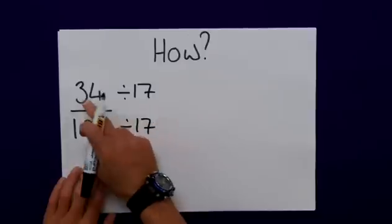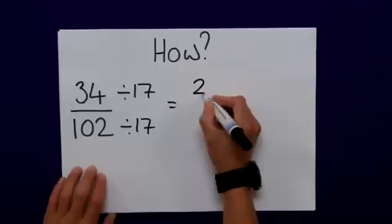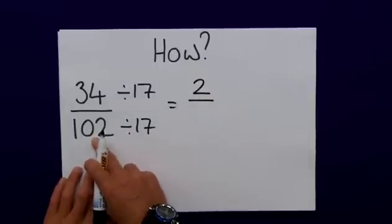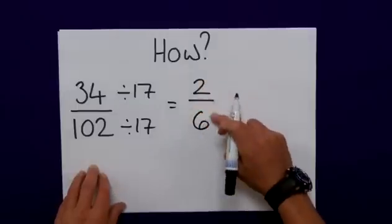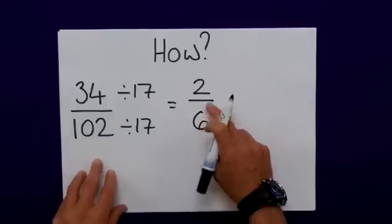So 34 divided by 17 is equal to 2, and 17 into 102—now I can use a calculator—is actually 6. But hang on, is that in lowest terms? I know 2 will actually go into 6. So I could do it again.